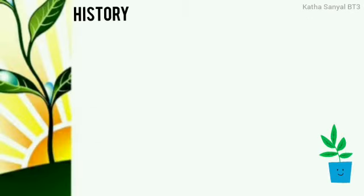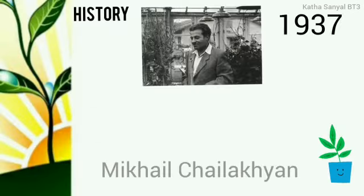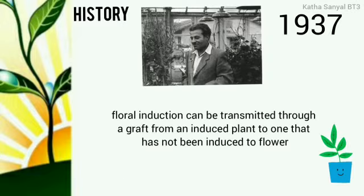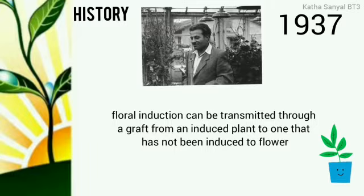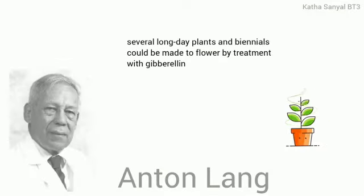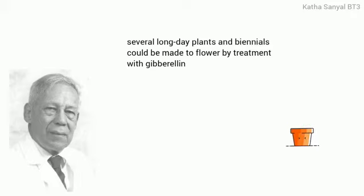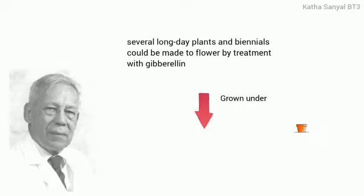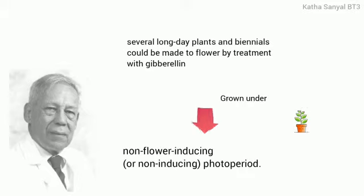Florigen was first described by Mikhail Chailakhyan, who in 1937 demonstrated that floral induction can be transmitted through a graft from an induced plant to one that has not been induced to flower. Anton Lang showed that several long-day plants and biennials could be made to flower by treatment with gibberellin when grown under a non-flower-inducing photoperiod.